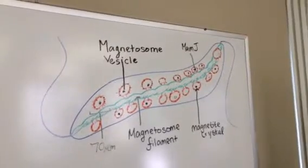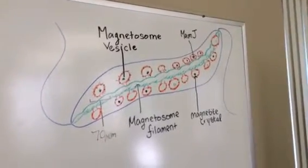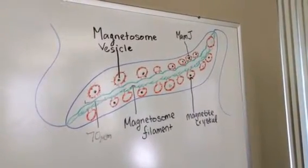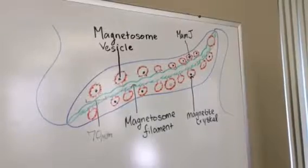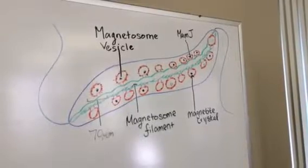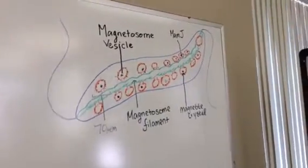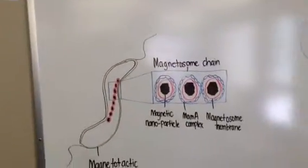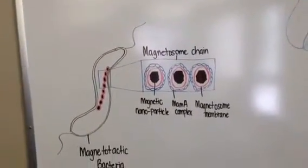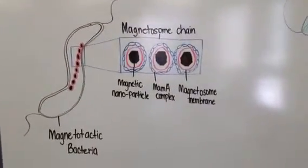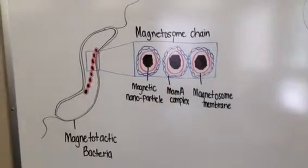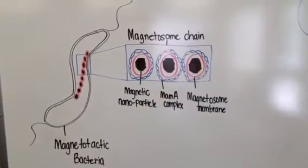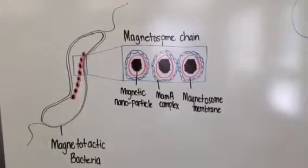Magnetite-bearing magnetosomes have also been found in eukaryotic magnetotactic algae, with each cell containing several thousand crystals. The particle morphology of magnetosome crystals varies but is consistent within cells of a single magnetotactic bacterial species or strain.